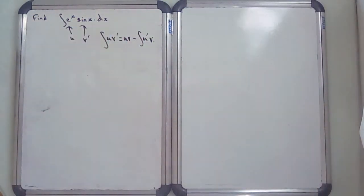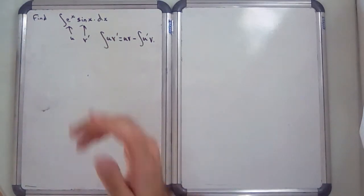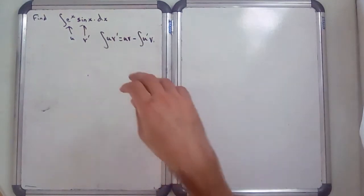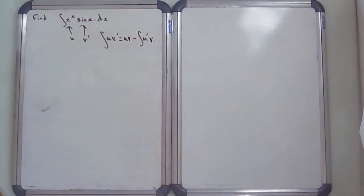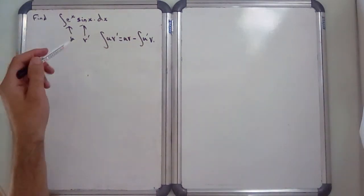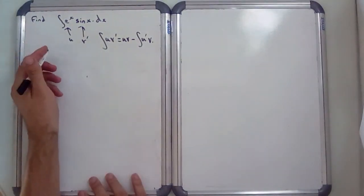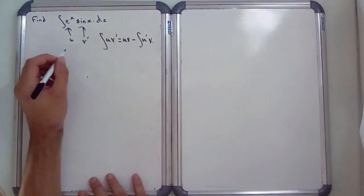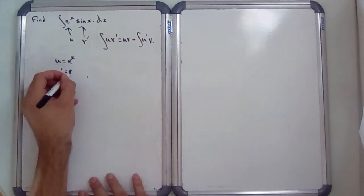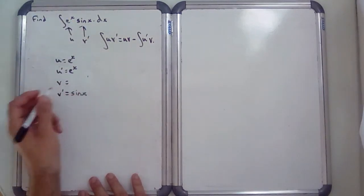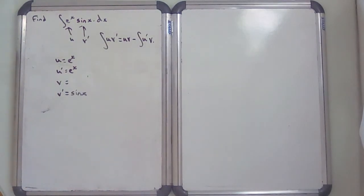You could potentially swap them around. e^x differentiates to e^x and integrates to e^x. sin(x) when you differentiate it will stay positive, so there was potentially an argument for making that the u and that the v-dashed — but it's a minor thing. So we need to make a little list: u = e^x, which means u' = e^x as well.